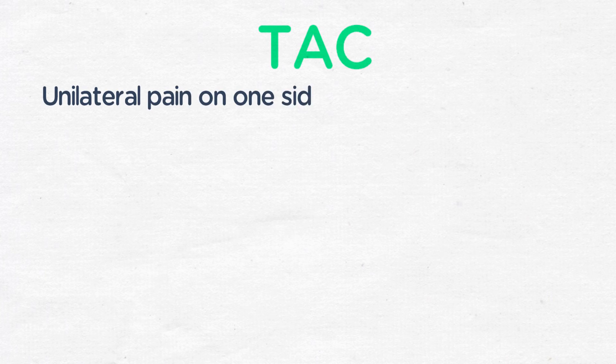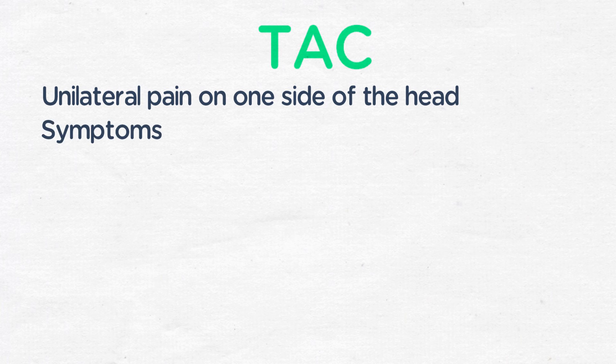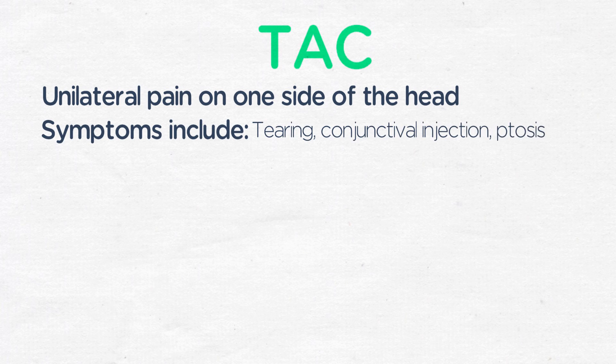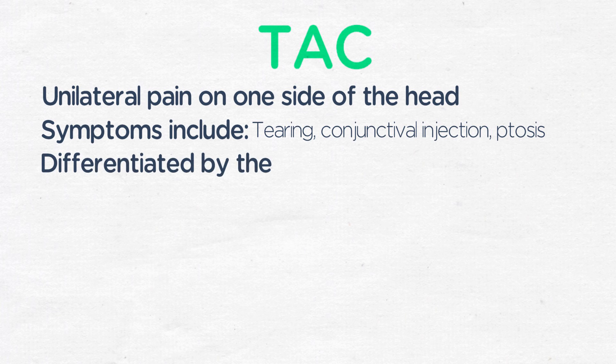The trigeminal autonomic cephalalgias are characterized by unilateral pain on one side of the head in the trigeminal nerve distribution with ipsilateral autonomic symptoms. Autonomic symptoms can include tearing, conjunctival injection, and ptosis. These are differentiated by duration and frequency of the headaches.